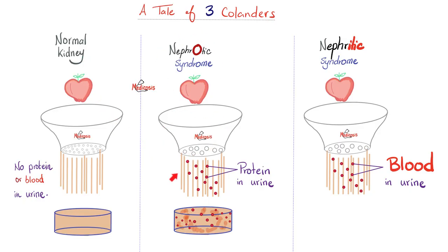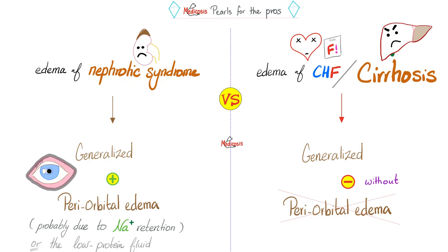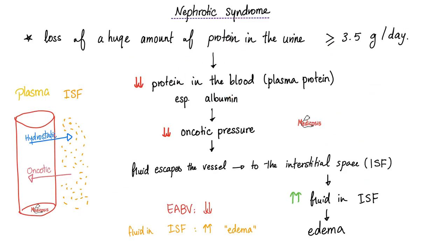Nephrotic syndrome is when your kidney loses protein in the urine — lots of protein, more than 3.5 grams per day. Nephrotic syndrome causes hyperproteinuria and hypoproteinemia. That's why you have low oncotic pressure and you get edema. The edema of kidney disease usually has periorbital edema too, unlike the edema of CHF and cirrhosis. This loss of proteins decreases albumin, which decreases oncotic pressure, and fluid leaves the vessel and accumulates in the interstitial fluid — hashtag edema.